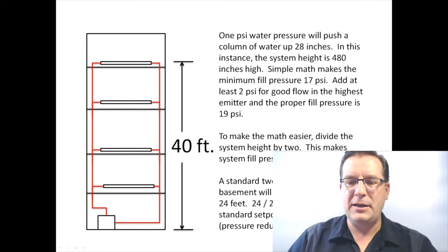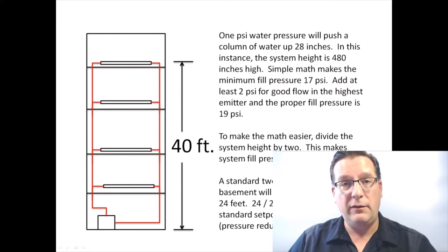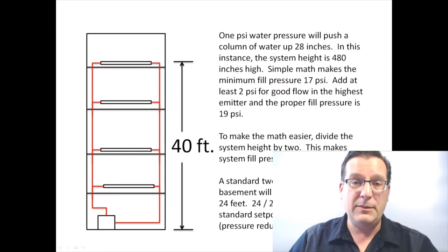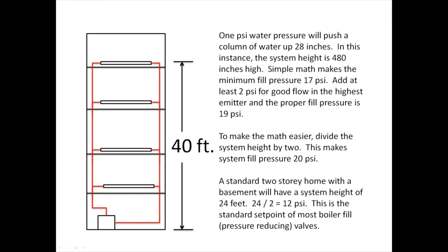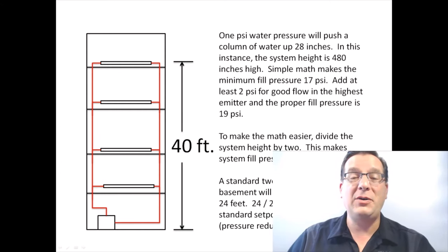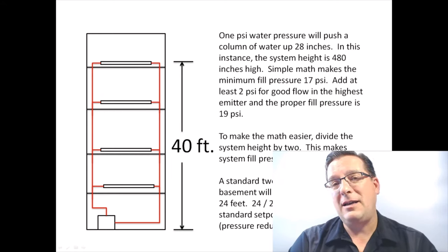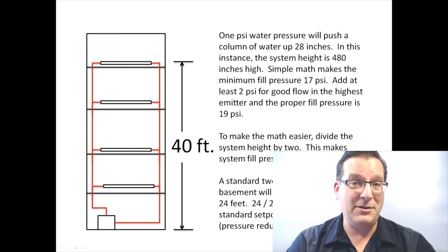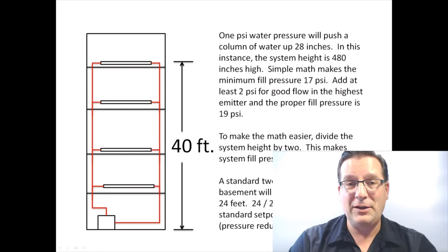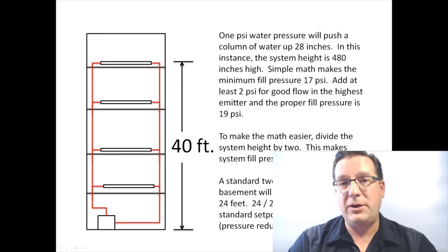If you buy a pressure reducing valve out of the box, back in the old days these used to come set at 12 PSI. Why? Because a standard two-story home with a basement has an average maximum height of about 24 feet, and 24 divided by 2 is 12 PSI. Nowadays, pressure reducing valves have started to come preset at about 15 PSI, likely because it's the style today to build taller houses with higher ceilings, and that's reflected in the standard pressure reducing valve set point.